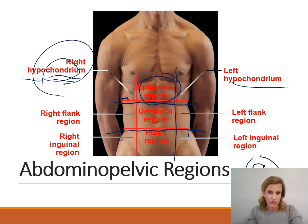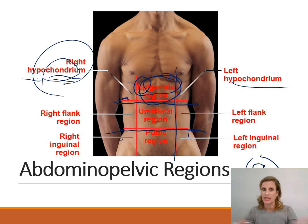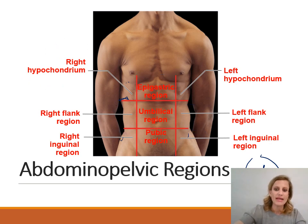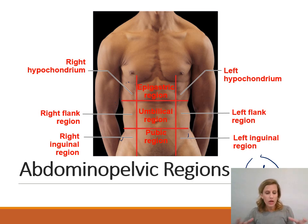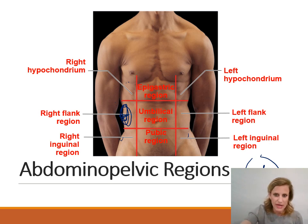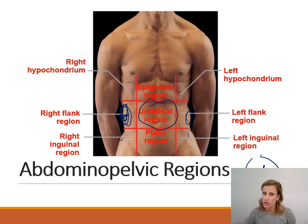In the middle is the epigastric region. Epi means upon, and gastro refers to the stomach, so this is the area over the stomach — and remember, the stomach does sit right about there. Moving down to the next three regions, the right and left flank are on either side — the flank is the side. These are also sometimes referred to as the lumbar regions, referencing the five lumbar vertebrae in the lower back. The umbilical region is right where the belly button is, since the technical term for the belly button is the umbilicus.